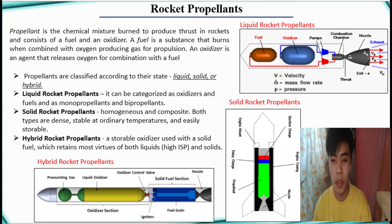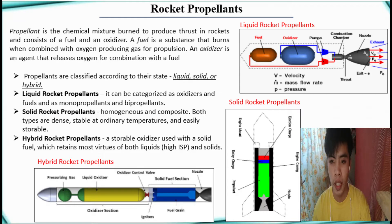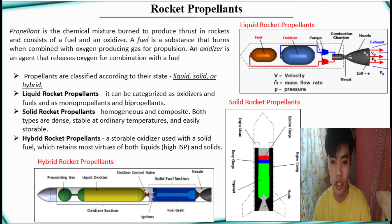Good day everyone. I am John Paul Alicia and I will discuss about rocket propellant. Rocket propellant is the reaction mass of a rocket. This reaction mass is ejected at the highest achievable velocity from a rocket engine to produce thrust.